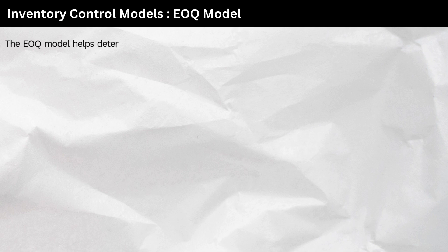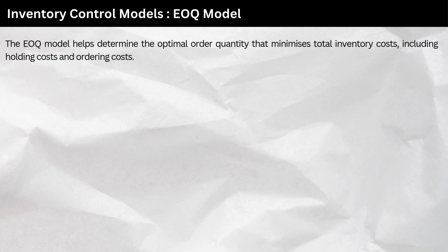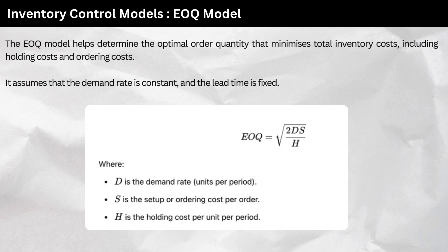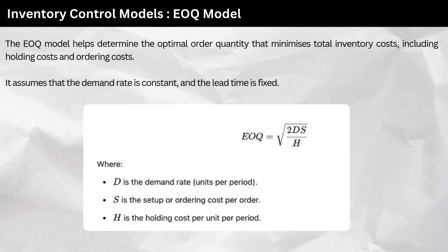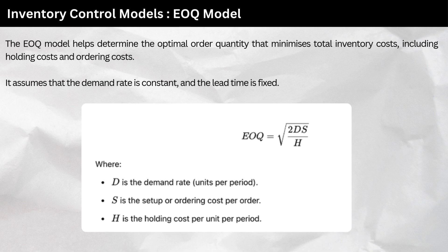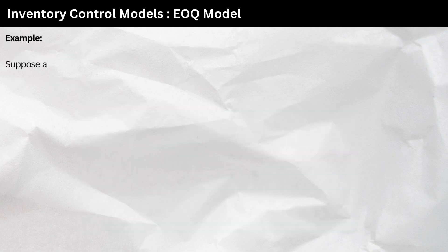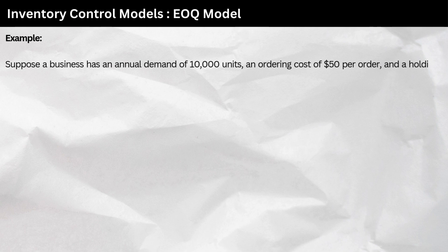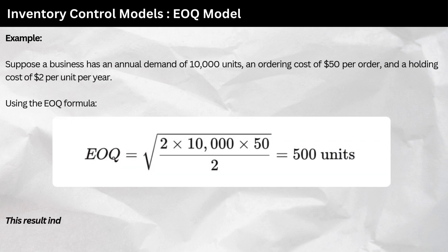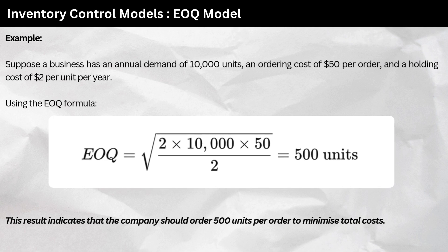1. Economic Order Quantity (EOQ) model. The EOQ model helps determine the optimal order quantity that minimizes total inventory costs, including holding costs and ordering costs. It assumes that the demand rate is constant and the lead time is fixed. The formula uses: D — the demand rate (units per period), S — the setup or ordering cost per order, H — the holding cost per unit per period. For example, a business with annual demand of 10,000 units, ordering cost of $50 per order, and holding cost of $2 per unit per year should order 500 units per order to minimize total costs.